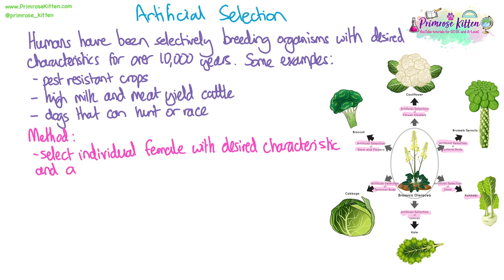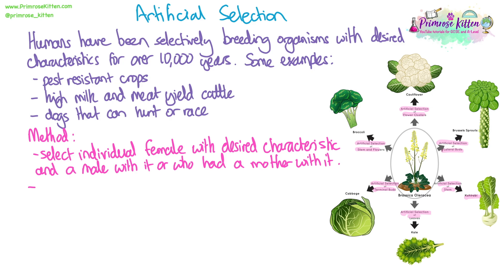It doesn't really matter what the question is about when asking you to describe artificial selection — the method is going to be the same. You're going to select an individual; normally we need a female and a male, so we select an individual female with the desired characteristic and then a male with that characteristic as well if possible. Sometimes this is more possible with plants. Or in terms of cows and milk, male cows don't produce milk, so you might select a male cow whose mother had a high milk yield. Once you have your two individuals with the characteristic you want, or an ancestral history of it, you breed these two together.